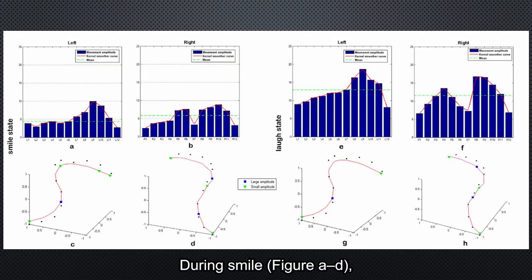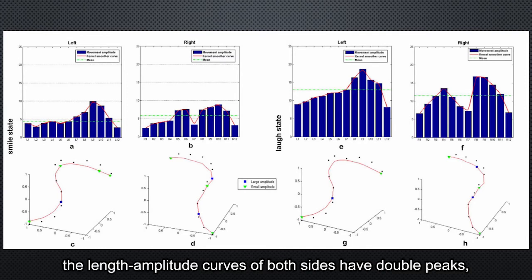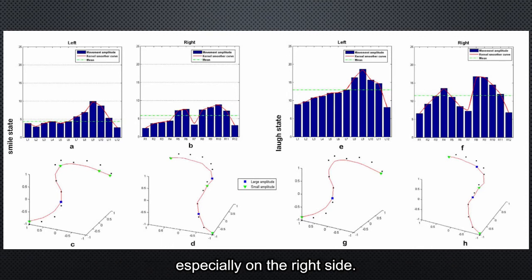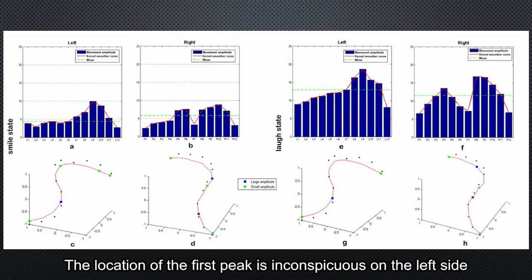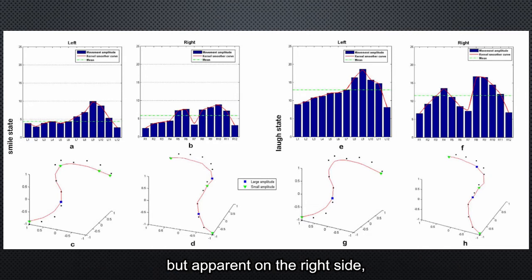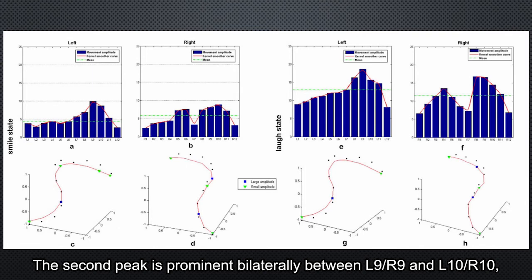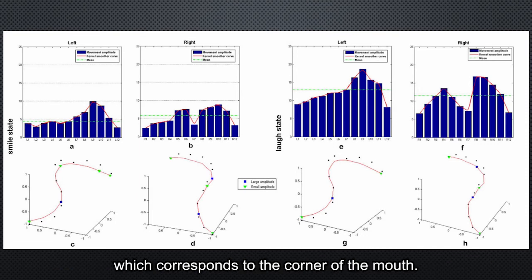During smiling (figures A to D), the length of the two curves on both sides have double peaks, especially on the right side. The location of the first peak is inconspicuous on the left side but apparent on the right side, between R5 and R6. The second peak is prominent between L9, R9 and L10, R10, which corresponds to the corner of the mouth.